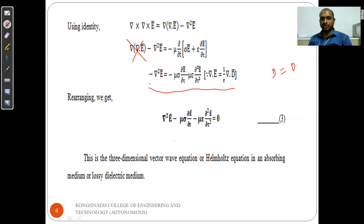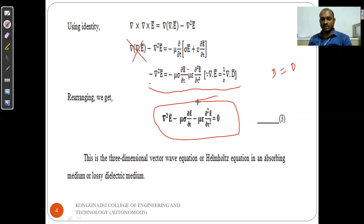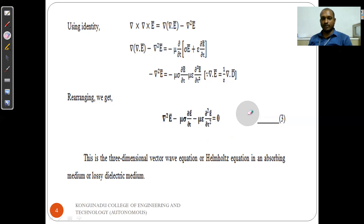The equation becomes: del²E equals mu*sigma*(∂E/∂t) plus mu*epsilon*(∂²E/∂t²). Rearranging, the final equation is: del²E minus mu*sigma*(∂E/∂t) minus mu*epsilon*(∂²E/∂t²) equals zero. This is the three-dimensional vector wave equation, or Helmholtz equation, in terms of the electric field.